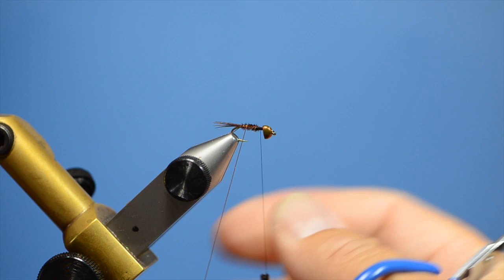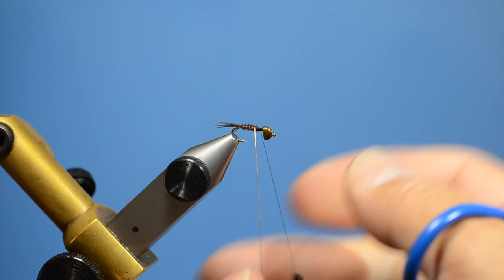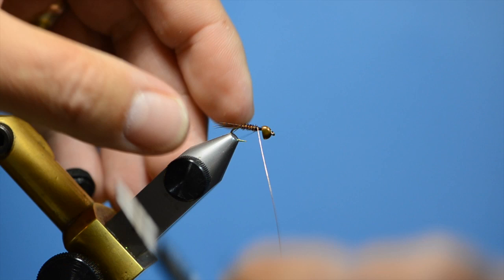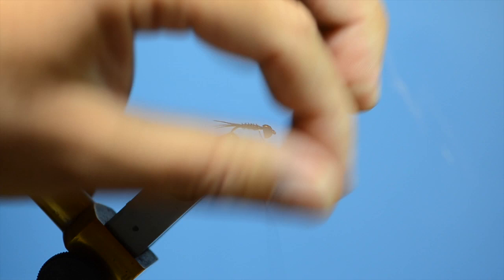Take my copper wire and counter wrap it up through the body. Making sure I really get that wire tied down when I put the tie off point. Since you are counter ribbing, it always wants to move the thread back into the body.